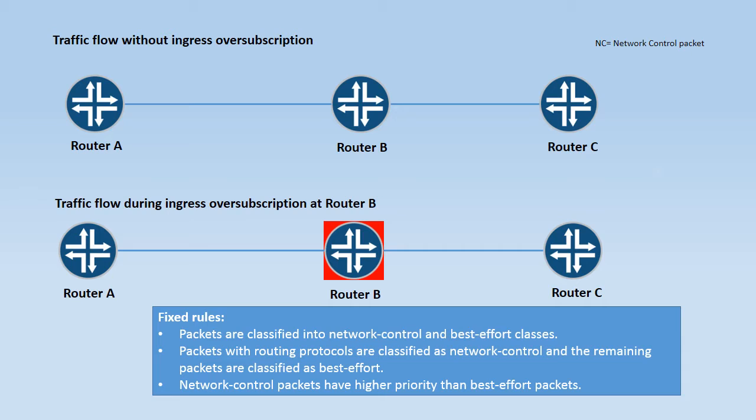Based on these rules, the packet forwarding engine of router B classifies the packets into network control and best effort classes. Packets with protocols such as routing protocols are marked as network control packets, and the rest — such as data and voice — are marked as best effort packets. The network control packets always have higher priority than the best effort packets.